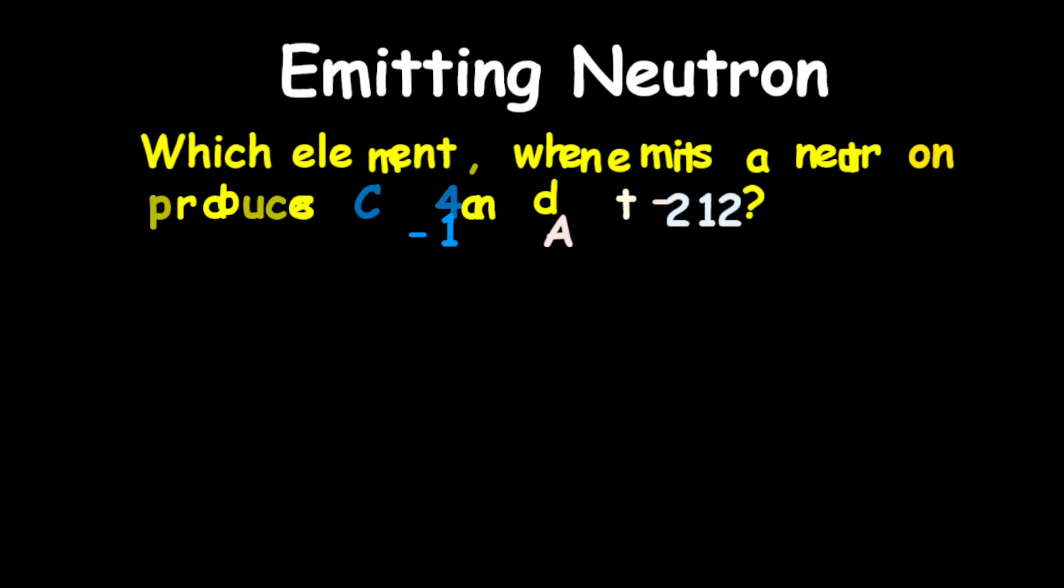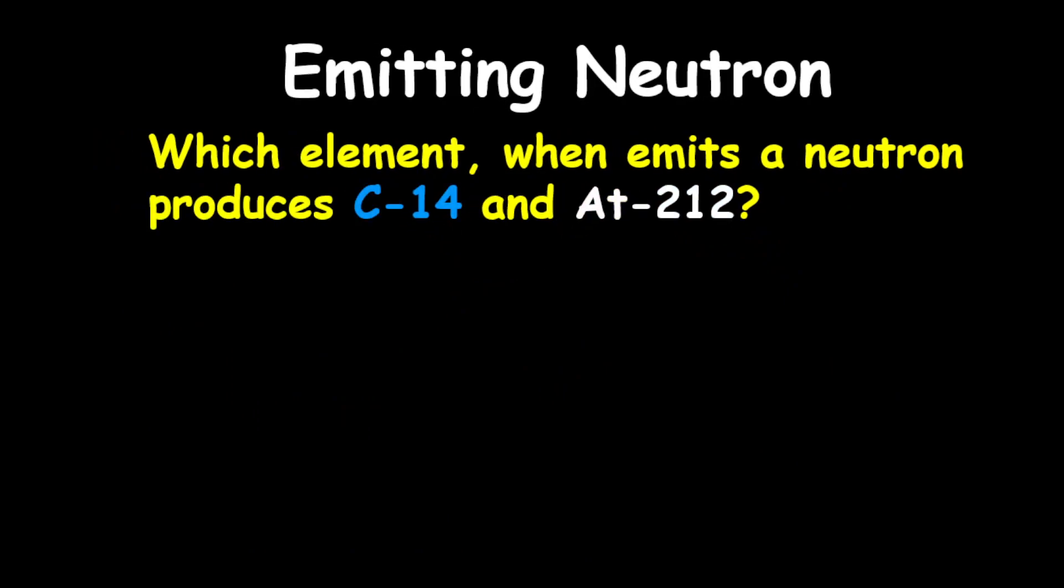Now for our second example, which element, when emits a neutron, produces carbon-14 and astatine-212?